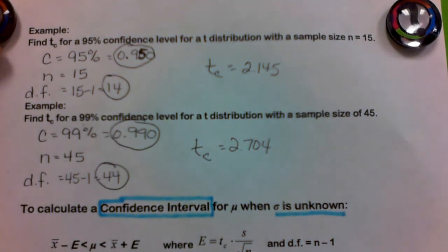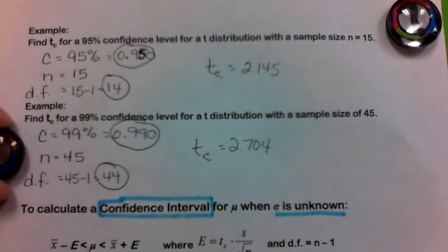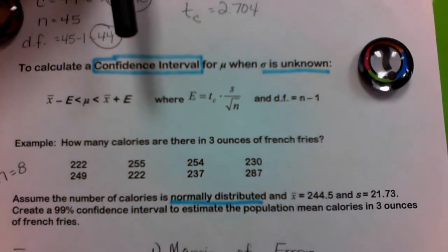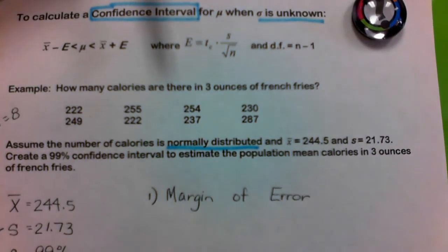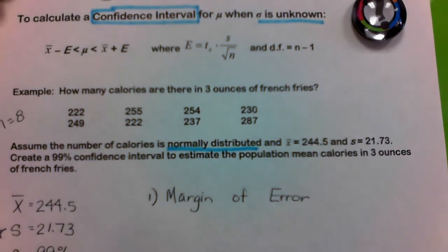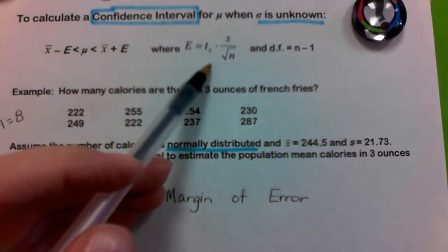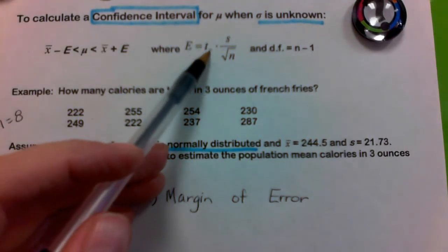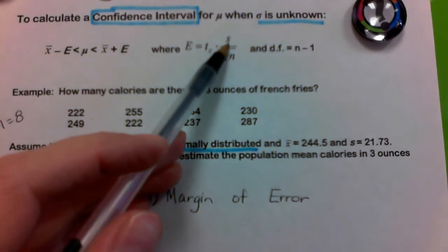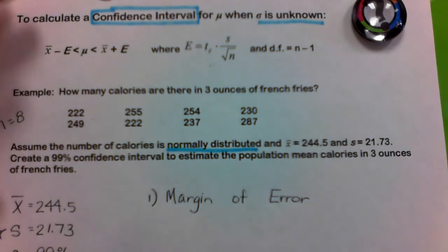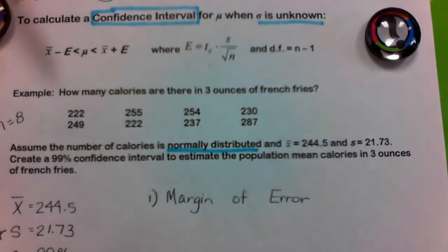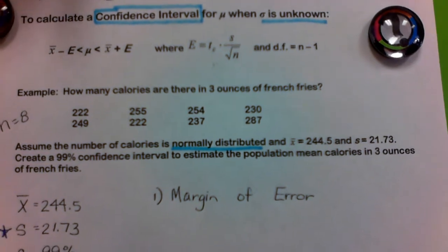That's how you use the Student's T distribution. Now let's take that information and calculate the margin of error. Notice it's T sub C and S. Then we create the confidence interval, which is the same: X bar minus E to X bar plus E.